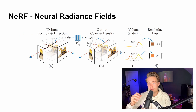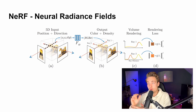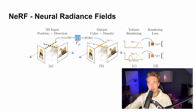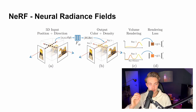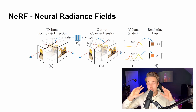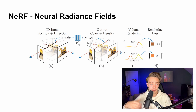The way NERF works is that we feed input images into a neural network and get an output. The input to the network is five-dimensional — it represents the position and direction of each individual point captured in our images. Importantly, we don't need any 3D information to render new views of our environment. We just have a set of 2D images of our scene and we want to reconstruct it with really high quality.